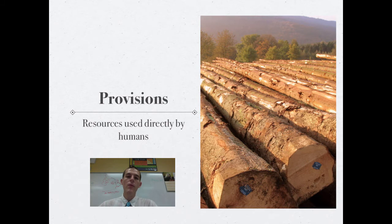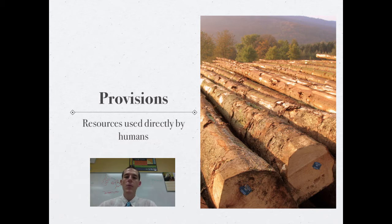The first type of ecosystem service is the category of provisions. Provisions are resources used directly by humans. Some examples of provisions would be lumber that we get from the forest, food that we grow from a field, and medicines that we take from the rainforest.